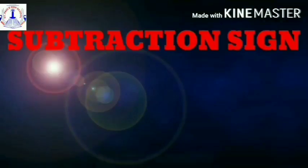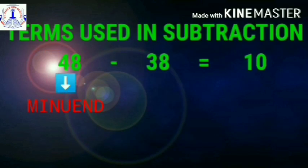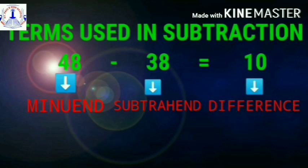Ok students, without wasting any time, we are going to solve the sums. Now students, in the previous class you have already learnt subtraction, but in smaller numbers. Now we are going to learn bigger numbers. We use the subtraction sign to write the subtraction sentence. Do you remember the terms used for the numbers in subtraction? The number from which a number is subtracted is called the minuend. The number that is subtracted is called the subtrahend. And the answer we get after subtraction is called the difference. So 48 is the minuend, 38 is the subtrahend, and 10 is the difference.